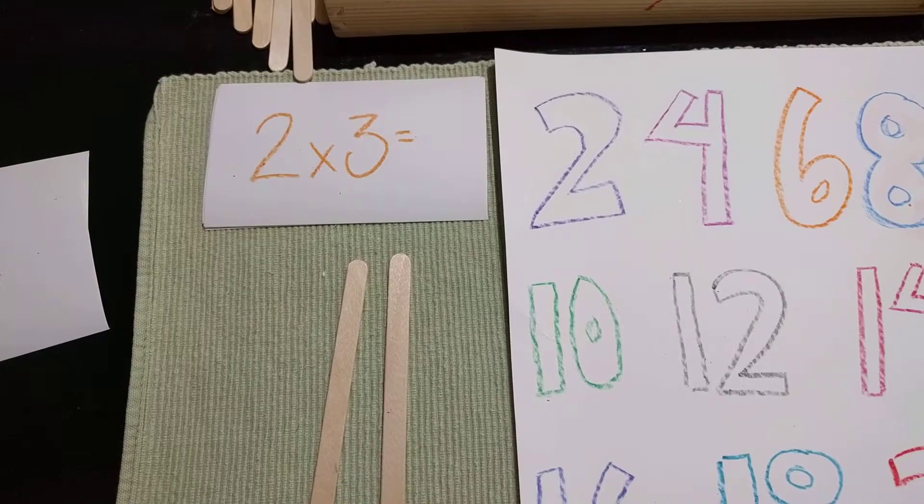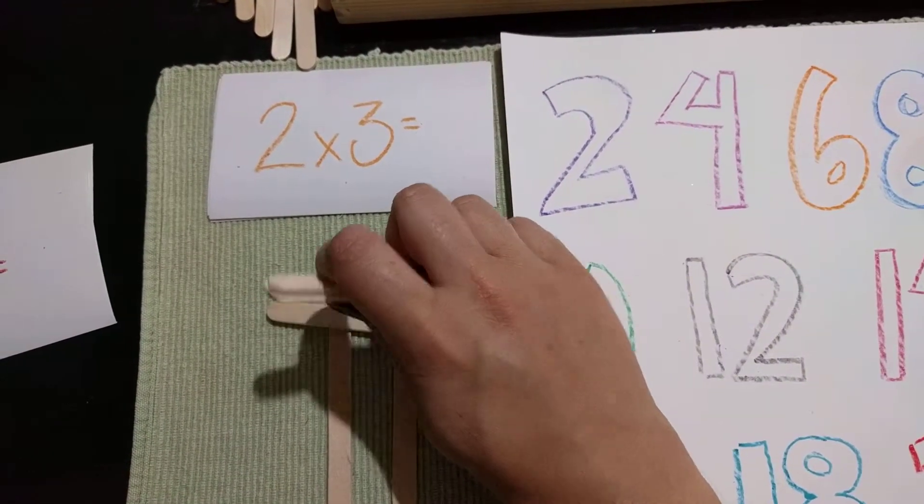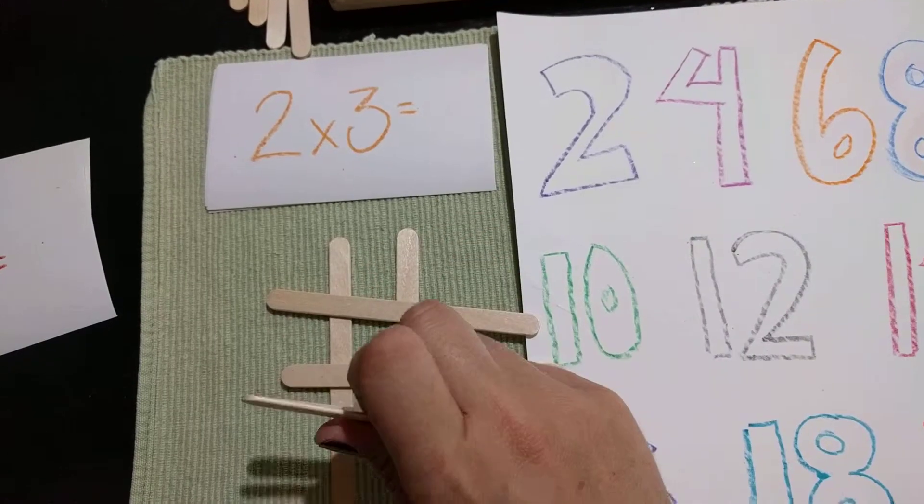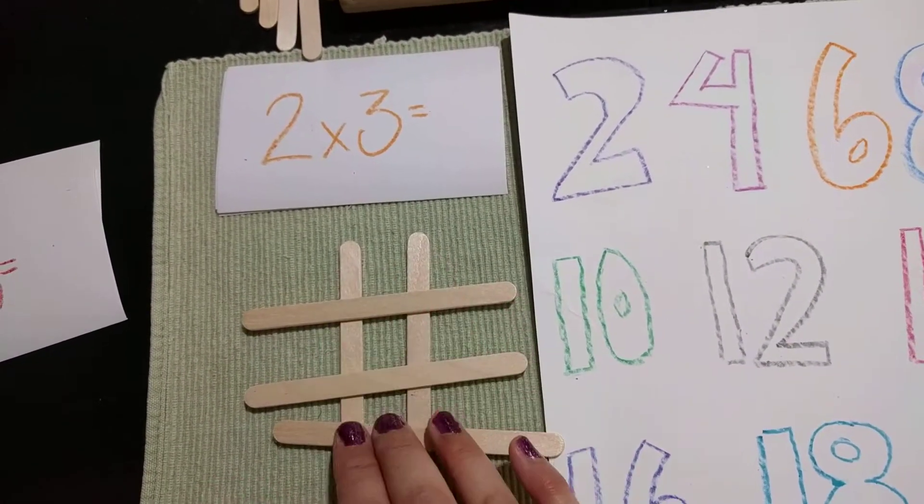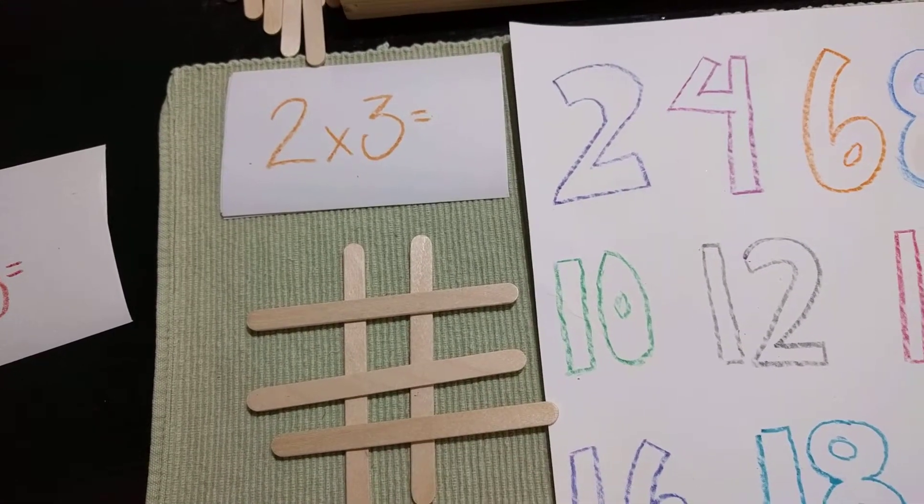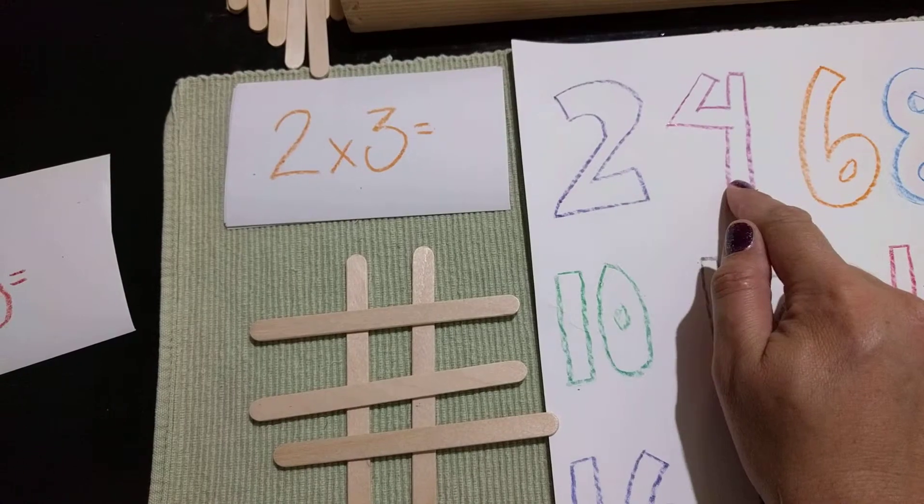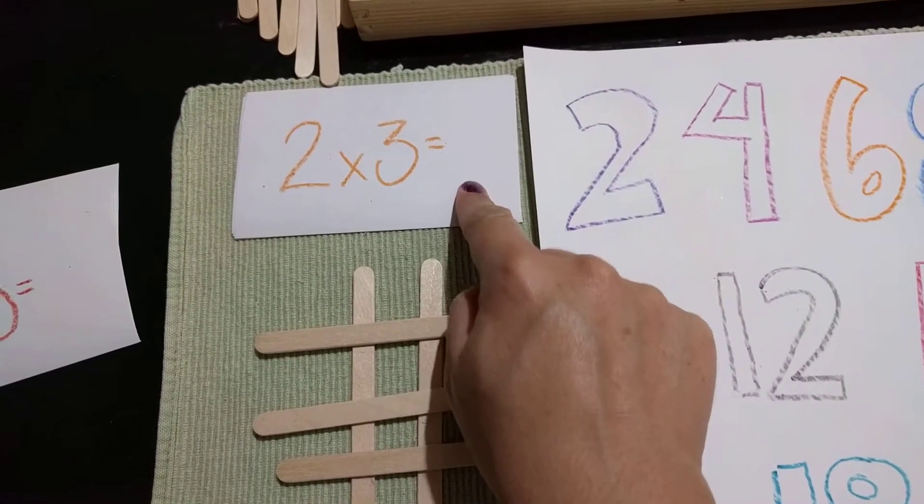2 times 3. 2 times 3. 1, 2, 3. 1, 2, 3, 4, 5, 6. That's also 6. 2 times 3 is 6.